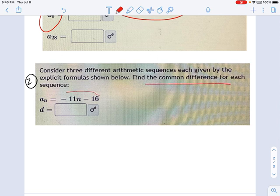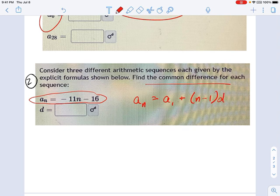So let's look at this one. a_n, and that's not a to the n, it's just a sub n, equals negative 11n minus 16. It wants to know what's the common difference. Well, think about what the explicit formula is. Let's write that here: a_n equals a_1 plus (n - 1) times d.